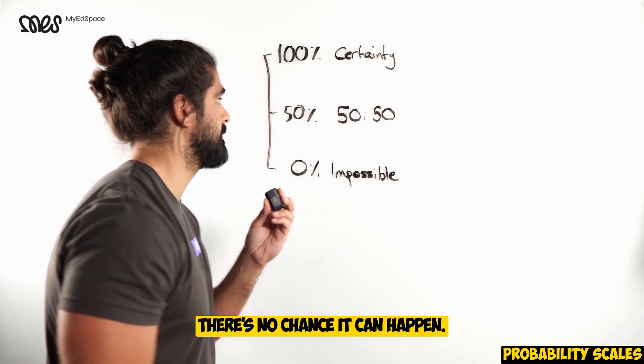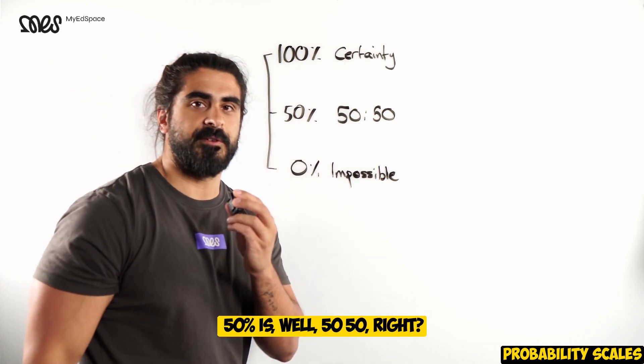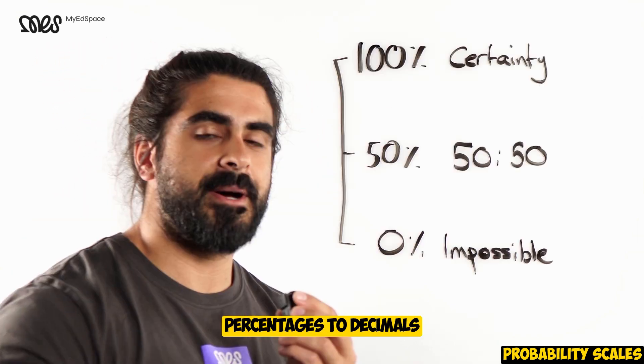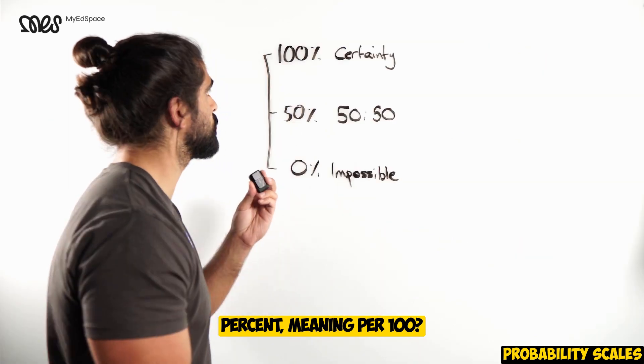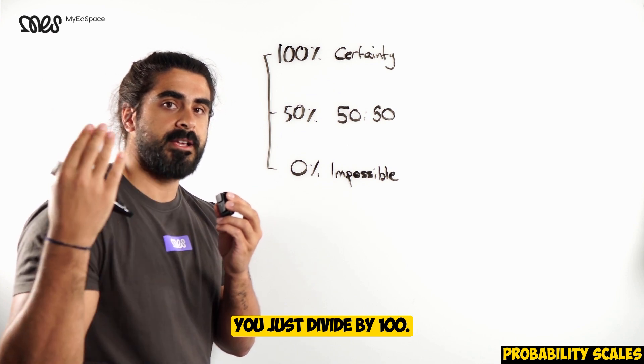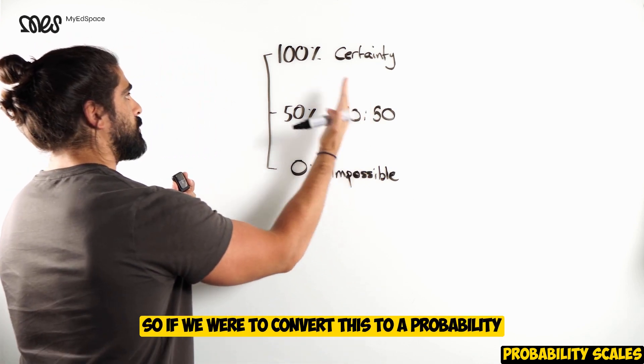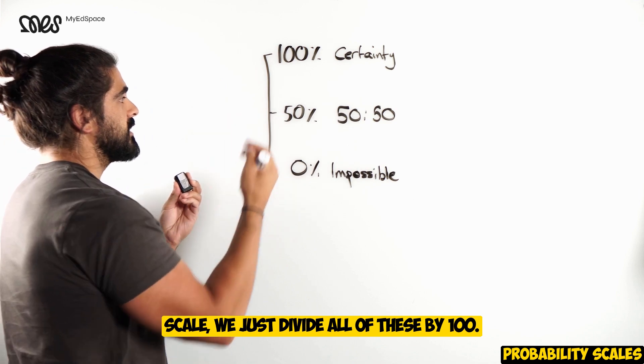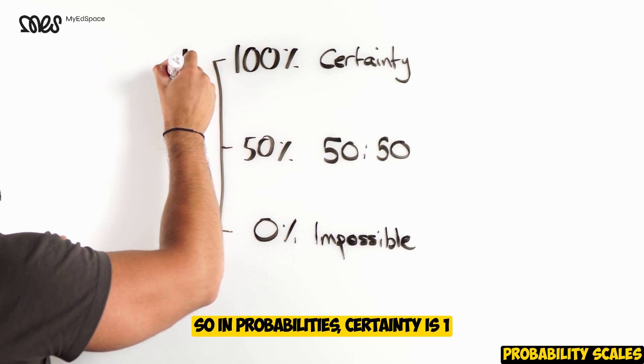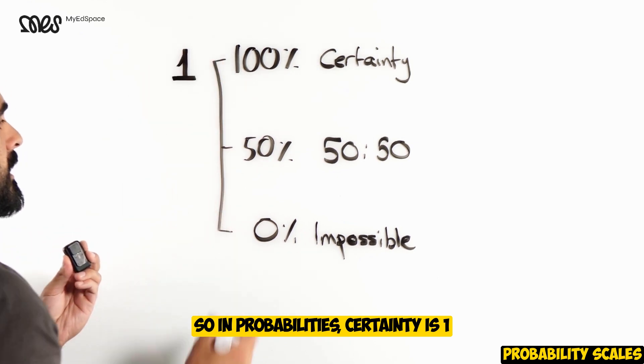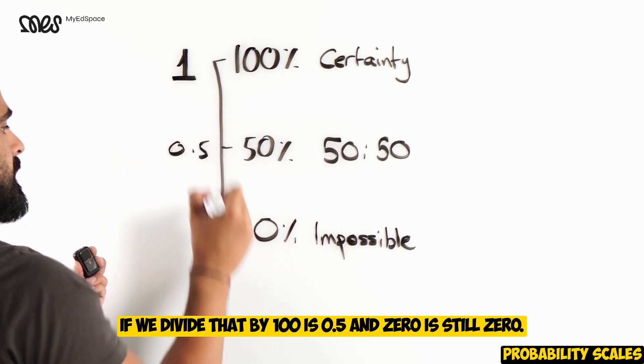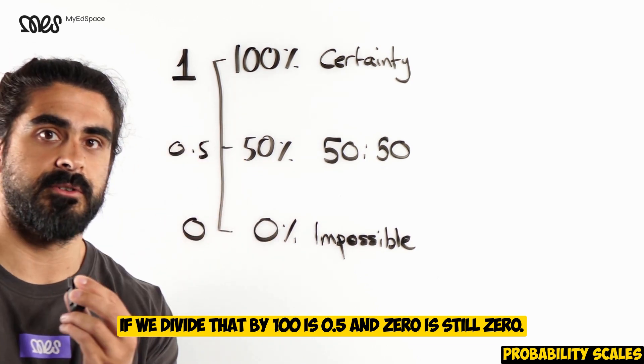50% is 50-50, right? Now the question is, how do we convert percentages to decimals? Percent, meaning per 100, to convert from percentages to decimals, you just divide by 100. So if we were to convert this to a probability scale, we just divide all of these by 100. So in probabilities, certainty is 1. 50-50, if we divide that by 100, is 0.5. And 0 is still 0.